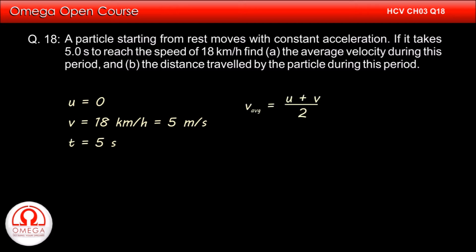The average velocity in uniformly accelerated motion is given by initial speed plus final speed divided by 2. Putting the values, we get average velocity is equal to 0 plus 5 by 2 or 2.5 m per second. This is answer to part A of the question.